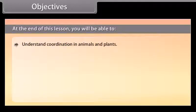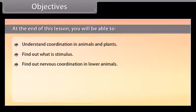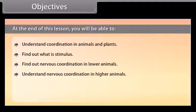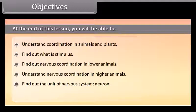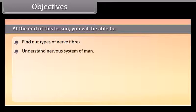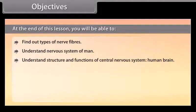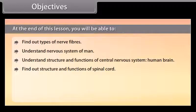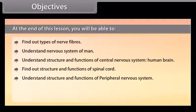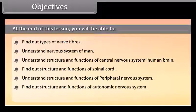At the end of this lesson, you will be able to understand coordination in animals and plants, find out what is stimulus, find out nervous coordination in lower animals, understand nervous coordination in higher animals, find out the unit of nervous system, find out types of neurons, types of nerve fibers, understand the nervous system of man, structure and functions of the central nervous system, human brain, spinal cord, peripheral nervous system, autonomic nervous system, and understand reflex actions.